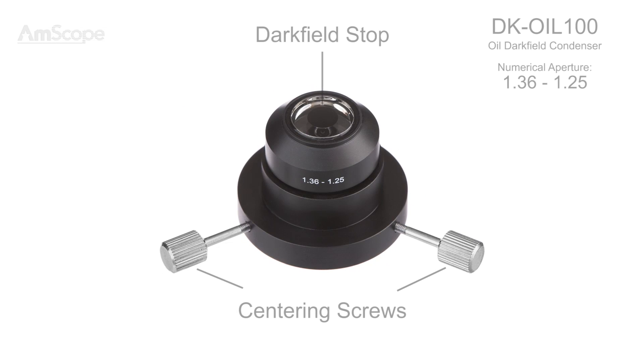An oil immersion condenser is needed for higher magnification lenses, such as a 100x lens. Due to the high numerical aperture of these lenses, typically 1.25 or higher, a condenser of correspondingly high aperture is needed, especially to maintain high resolution.